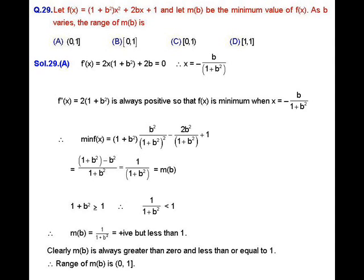For maxima and minima, we first take the derivative of f and equate it to 0. So f'(x) = 2x(1 + b²) + 2b. When we equate it to 0, we get x = -b / (1 + b²).